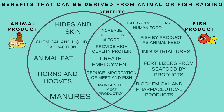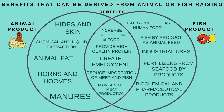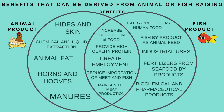Take a look at the diagram on the benefits that can be derived from animal and fish raising. On the left side you will see the animal products such as hides and skin, chemical and liquid extraction, animal fat, horns and hooves, and manure. On the right side are the fish products such as fish byproduct as human food, fish byproduct as animal feed, industrial uses, fertilizers from seafood byproducts, and biochemical and pharmaceutical products.